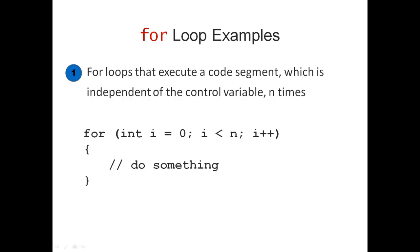It works for for loops that execute a code segment which is independent of the control variable n times. In other words, it can be used for any situation where you have to repeat a piece of code and the control variable is only used to make sure you repeat the right amount of times.